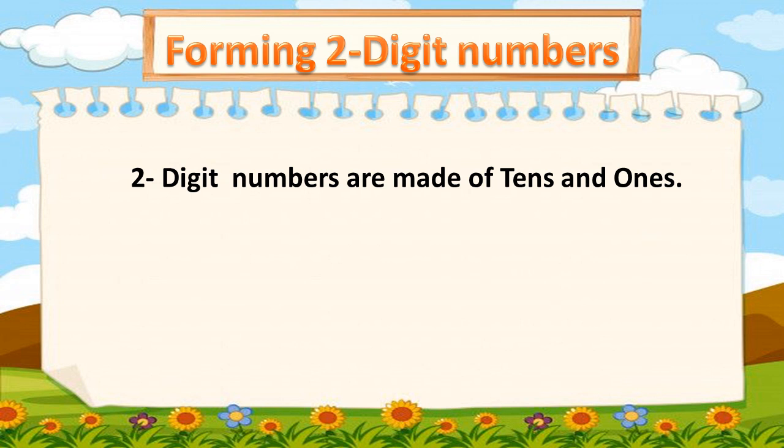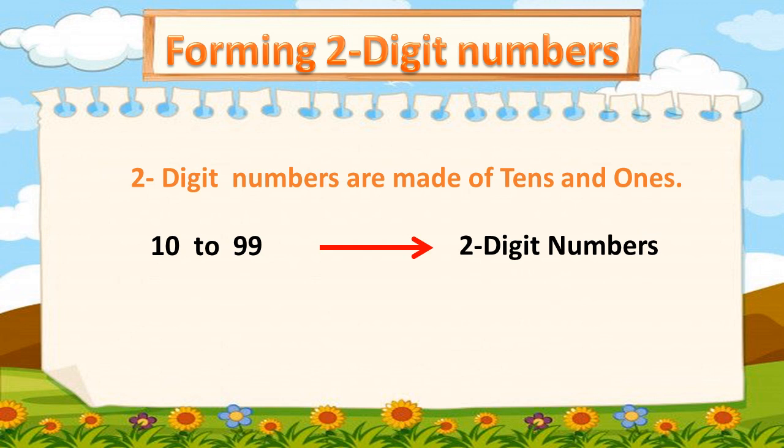Two-digit numbers are made of tens and ones. Ten to ninety-nine are two-digit numbers.